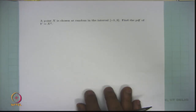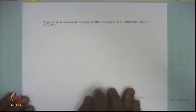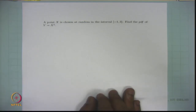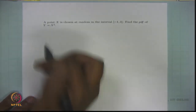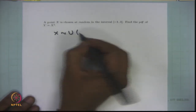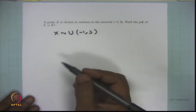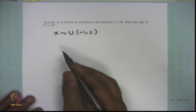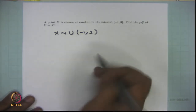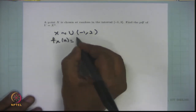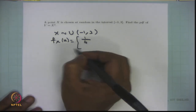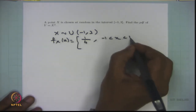In this problem, a point x is chosen at random in the interval [-1, 3]. Find the probability density function of y = x². A point chosen at random means it is a real number randomly chosen, so it follows uniform distribution. Therefore, x follows continuous uniform distribution between the interval -1 to 3. The probability density function is 1/4 for x between -1 and 3, and 0 otherwise, since the interval length is 4.